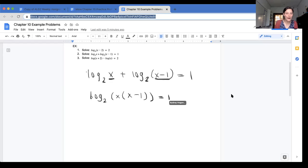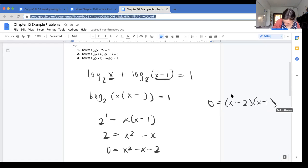And then again, I can rewrite this into exponential form. I know that this is going to be 2 to the 1 equals x times x minus 1. So 2 is equal to x squared minus x. I'm going to have to factor this. So I'm going to subtract 2 to the other side, and I get 0 equals x squared minus x minus 2. And then to factor, thankfully this guy is not too bad to factor. And so I get 0 is equal to x minus 2 times x plus 1.